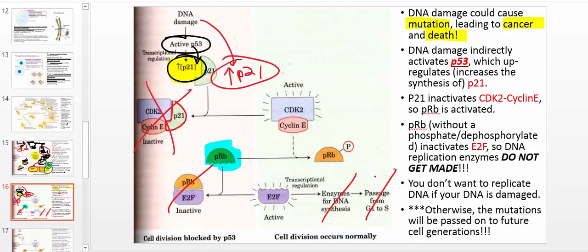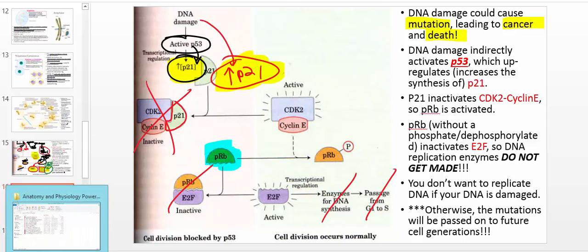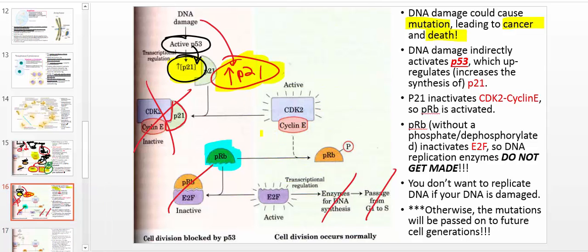To reiterate: DNA damage activates P53, which leads to an increase in the synthesis of P21. P21 then inactivates CDK2, which leads to activation of retinoblastic protein and inactivation of E2F. You don't get enzymes needed for DNA synthesis, and you don't get passage from G1 phase to the S phase. The cell does this because otherwise the mutations in the DNA will be passed on to future generations, which is biologically unfavorable.